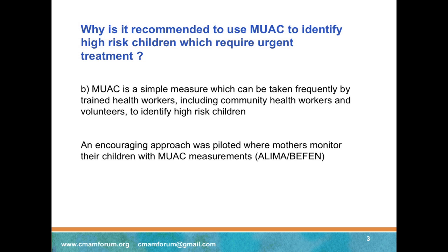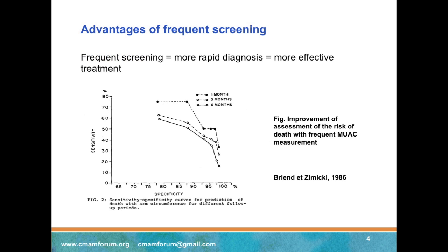As MUAC is a simple measure, it can be repeated frequently. Slide 4 shows the advantage of repeated measures. This slide shows a ROC curve on which the x-axis represents the specificity of MUAC to assess the risk of death, and the y-axis its sensitivity. By changing the cutoff you get a family of curves, and a curve higher on the graph indicates better prediction of risk of death. This graph is based on data collected in Bangladesh in the late 1970s and shows clearly that for shorter duration of follow-up — that is, shorter time between MUAC assessment and the time of death — you have a much better assessment of the risk of death.